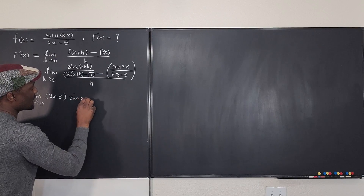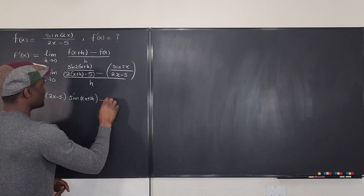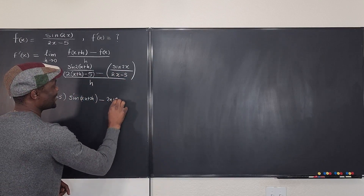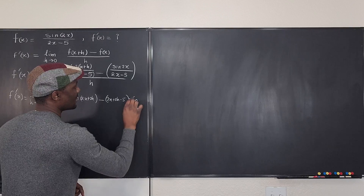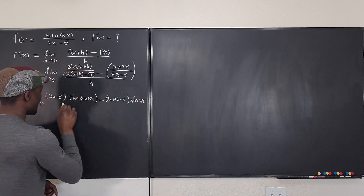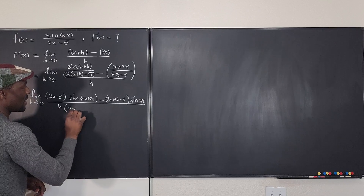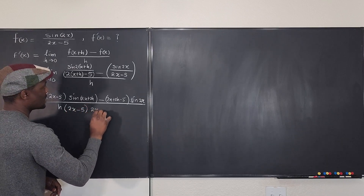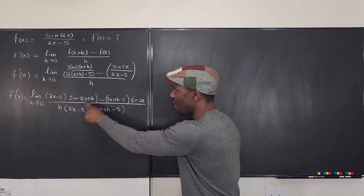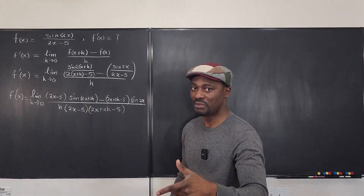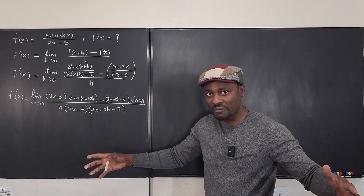So f prime of x becomes the limit as h goes to zero of: if you multiply top and bottom by those two denominators, this multiplies this — so you get 2x minus 5 times sine of 2x plus 2h. Minus — then you do the same thing on the other side — 2x plus 2h minus 5 times sine 2x. All divided by h times 2x minus 5 times 2x plus 2h minus 5.